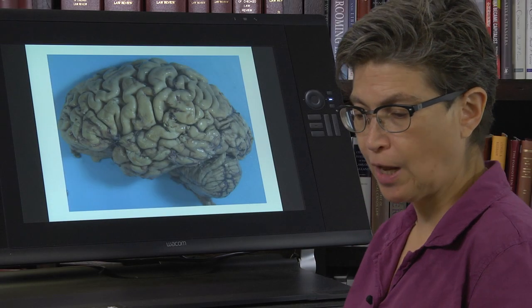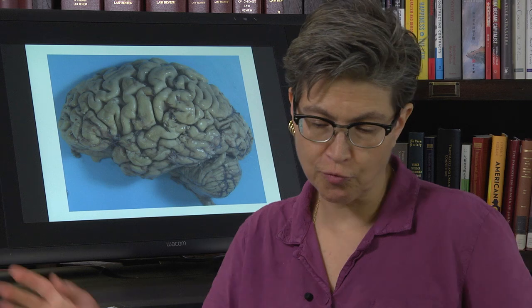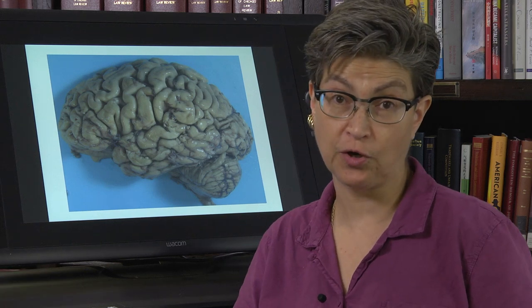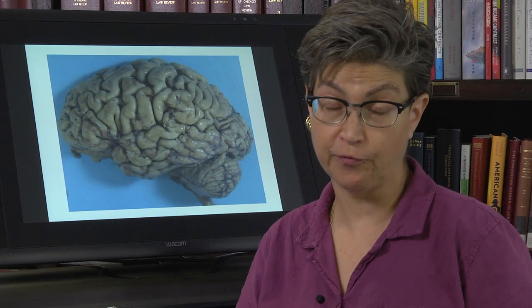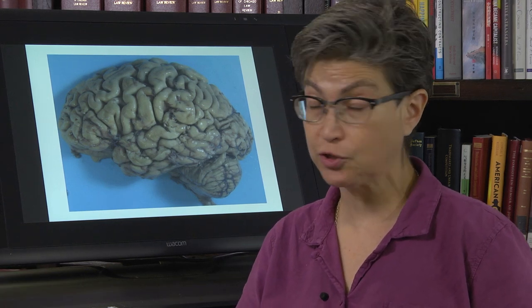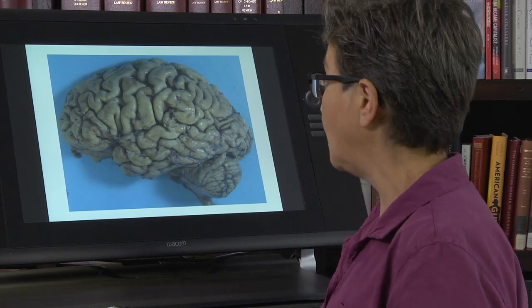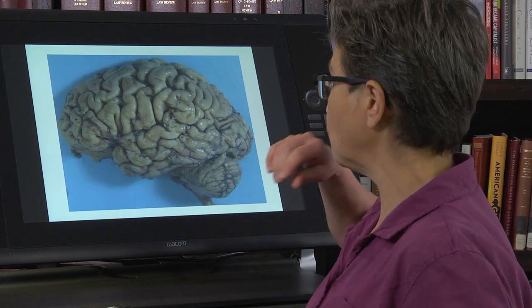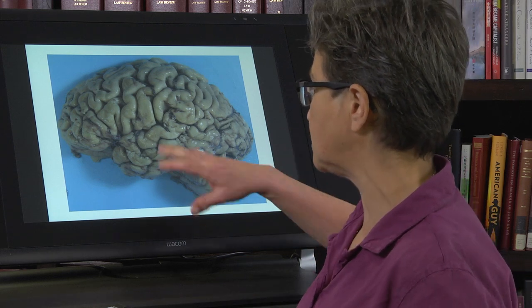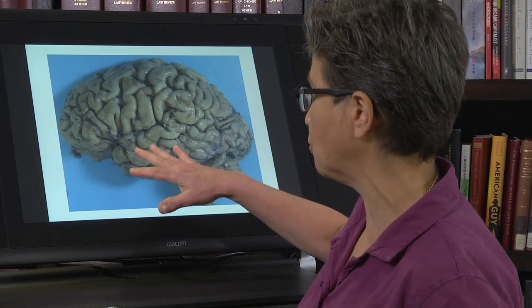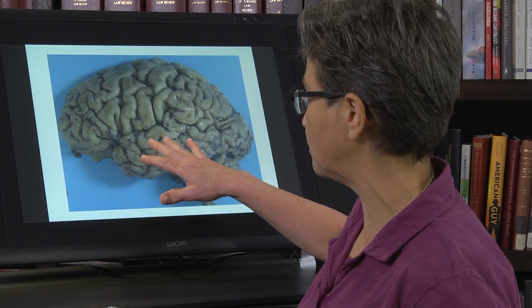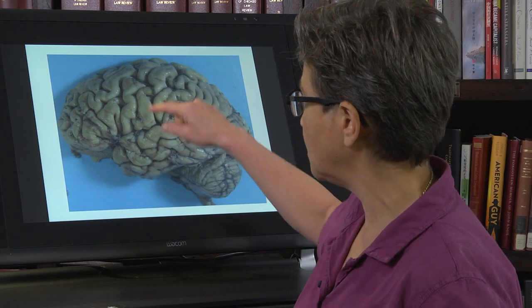We're now going to whip through the rest of the telencephalic function, the cerebral cortex function, and we're going to start with looking at some sensory motor cortex.